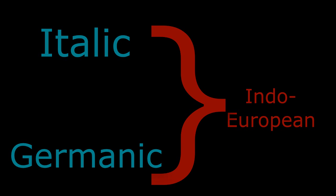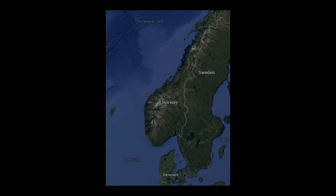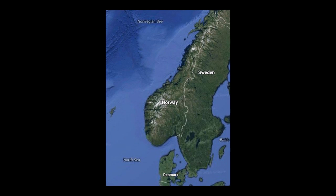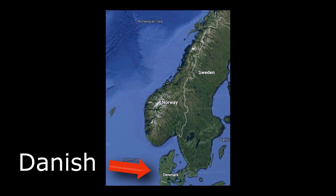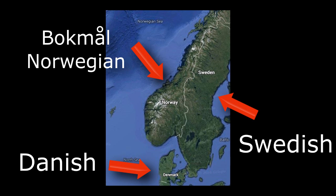A good example of this phenomenon of mutual intelligibility would be if we looked at the main languages of the three mainland Scandinavian countries: Denmark, Sweden, and Norway. These countries mainly speak the northern Germanic languages of Danish, Swedish, and Bokmål Norwegian respectively — save for the many regional dialects. It turns out that these three tend to have a high degree of mutual intelligibility among each other, aside from some vocabulary changes and pronunciation differences.